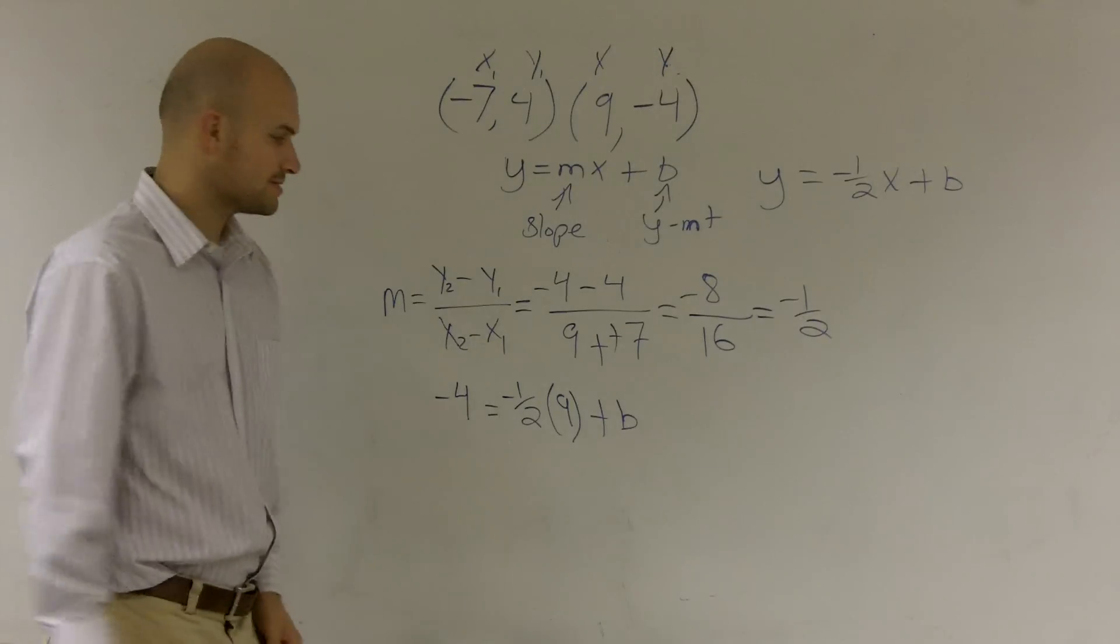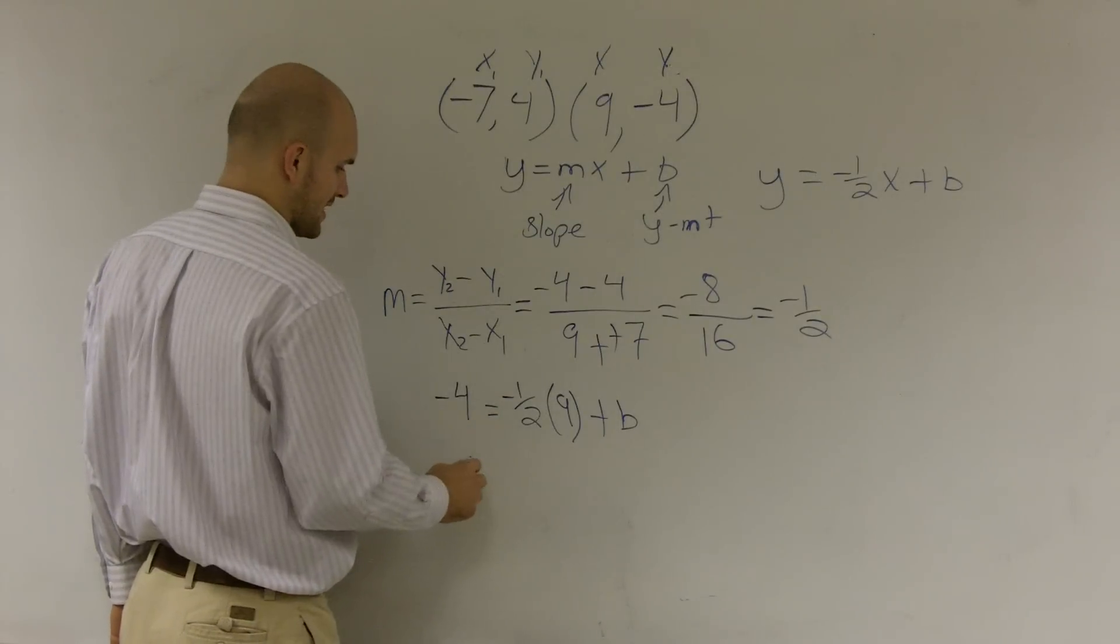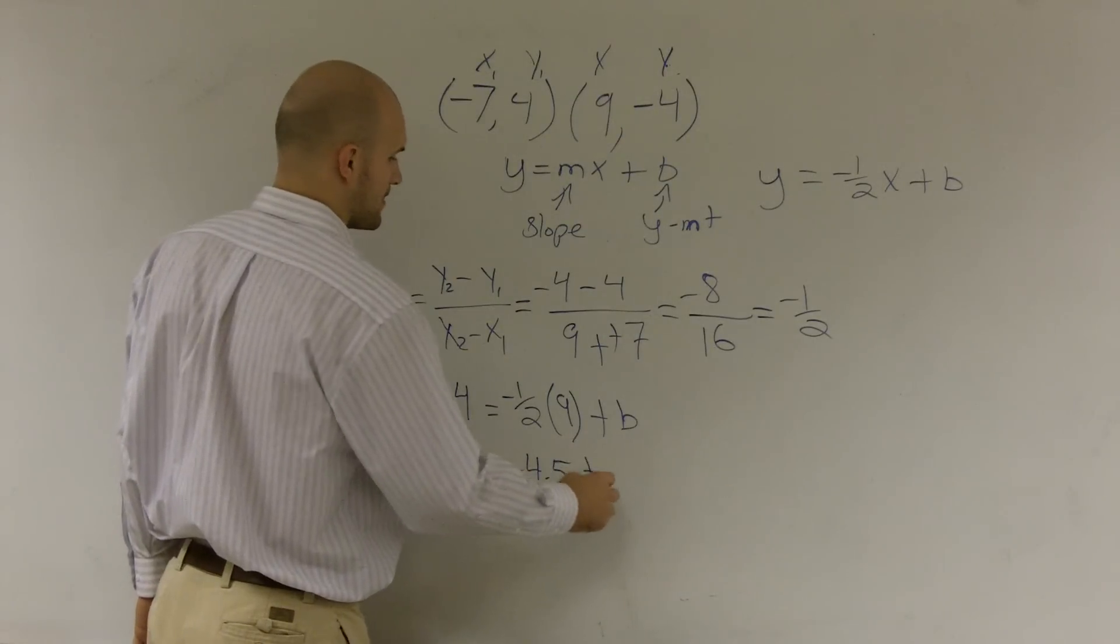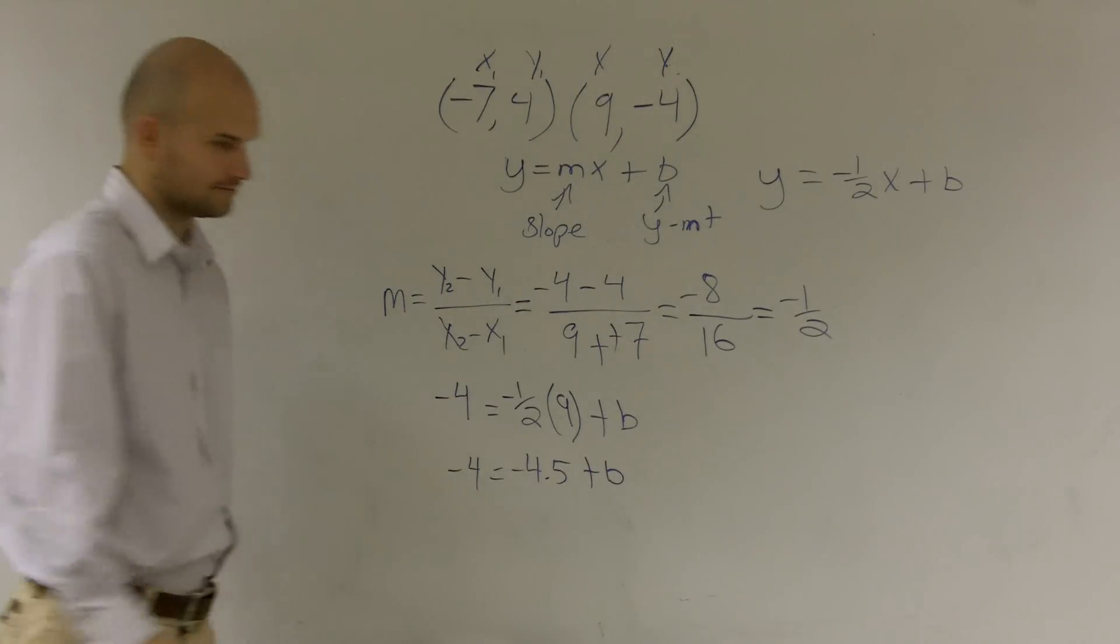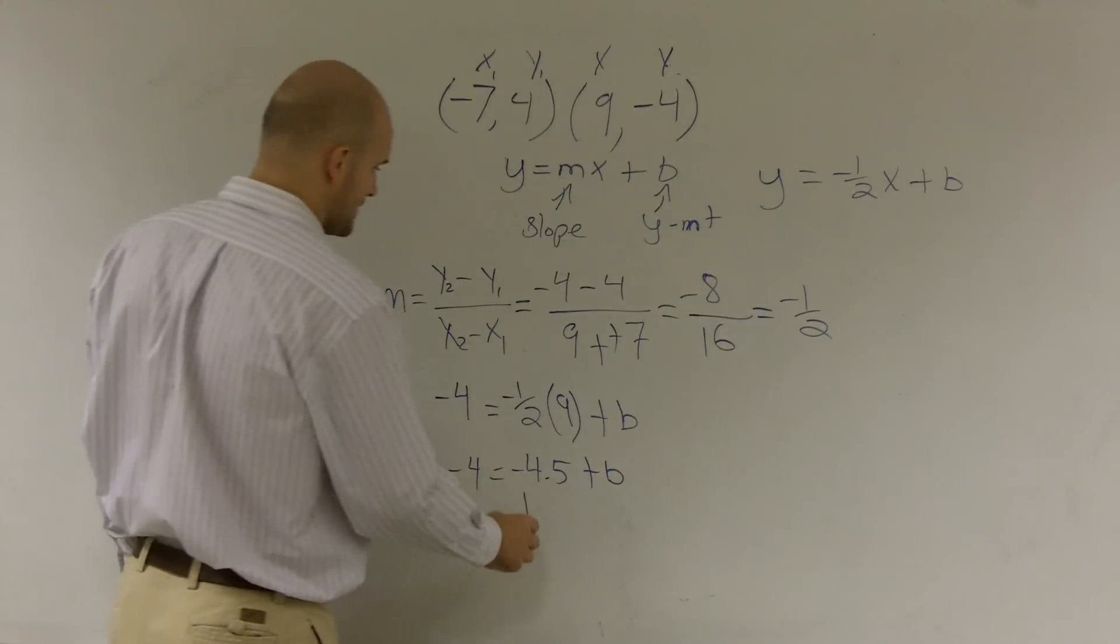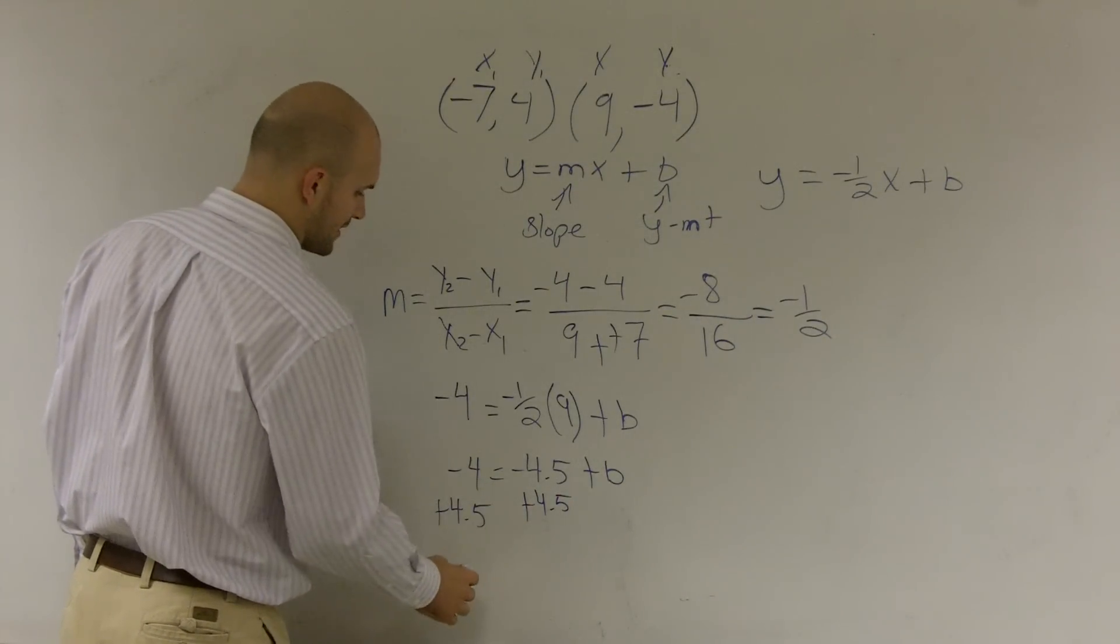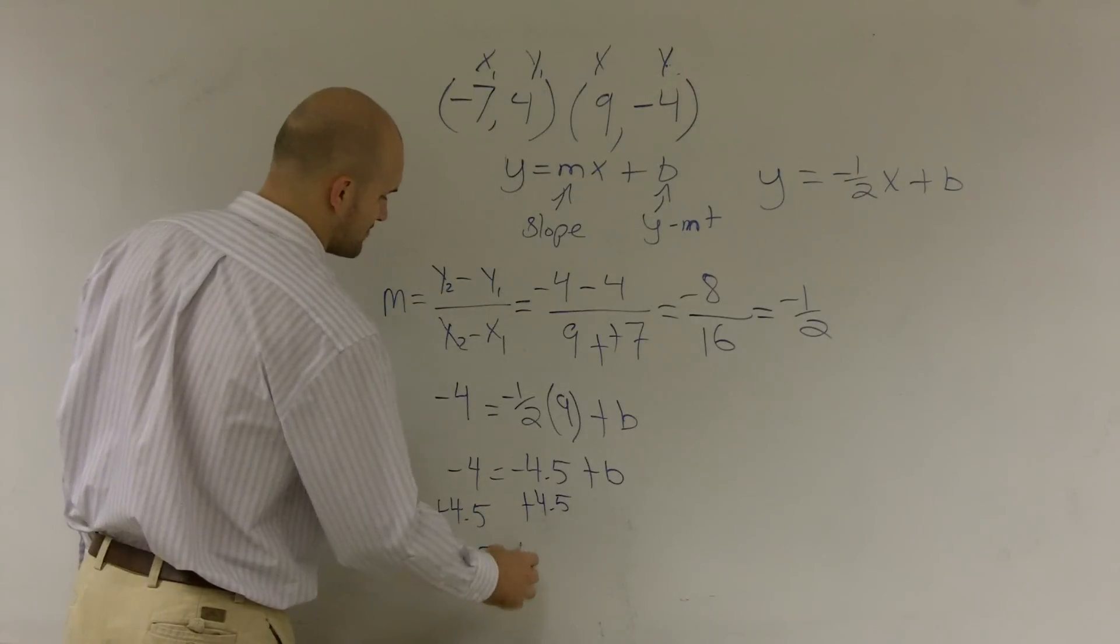So therefore, negative 1 half times 9 is going to give me negative 4 equals negative 4.5 plus b. Then I'll add 4.5, and what I get is 0.5 equals b.